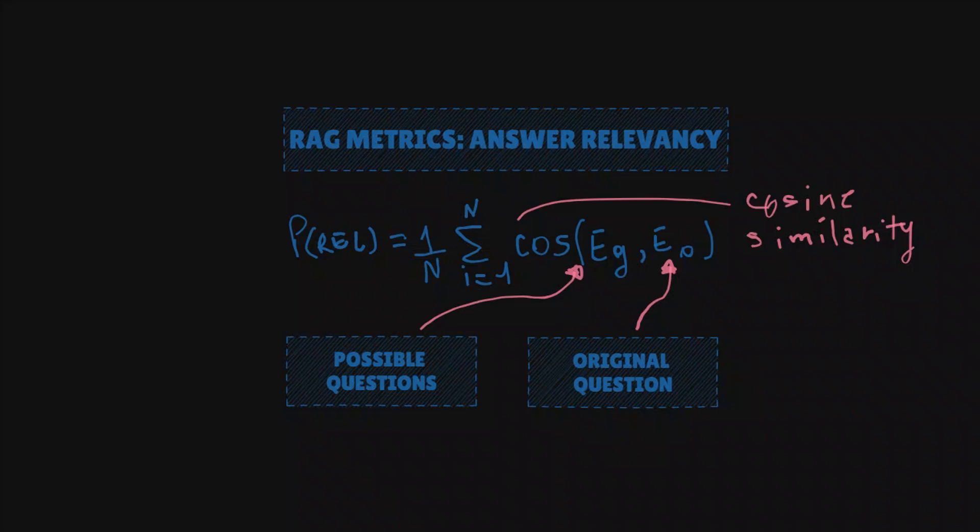Imagine that both your questions and possible answers are turned into vectors, or just lines in space. If the lines point in the same direction, they are super similar, meaning that the answer is likely to be relevant.